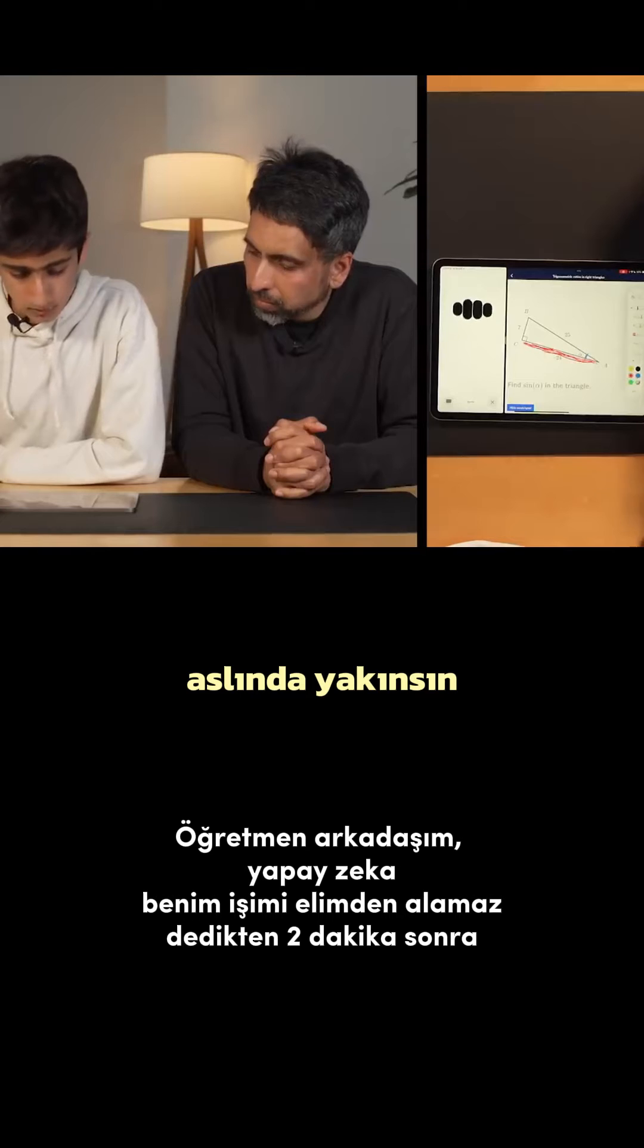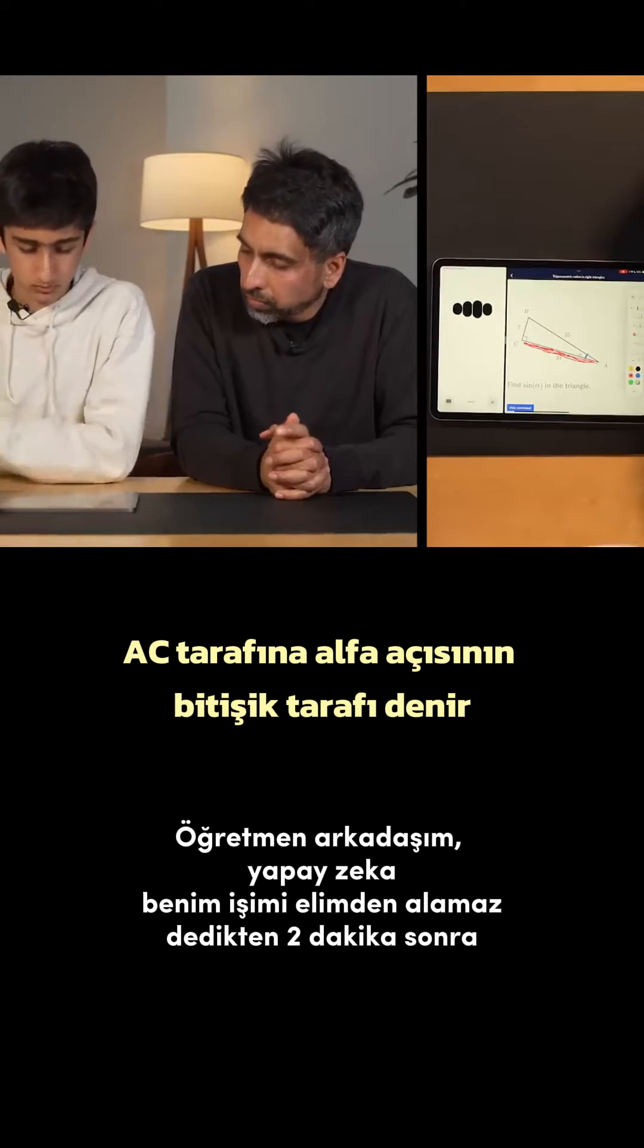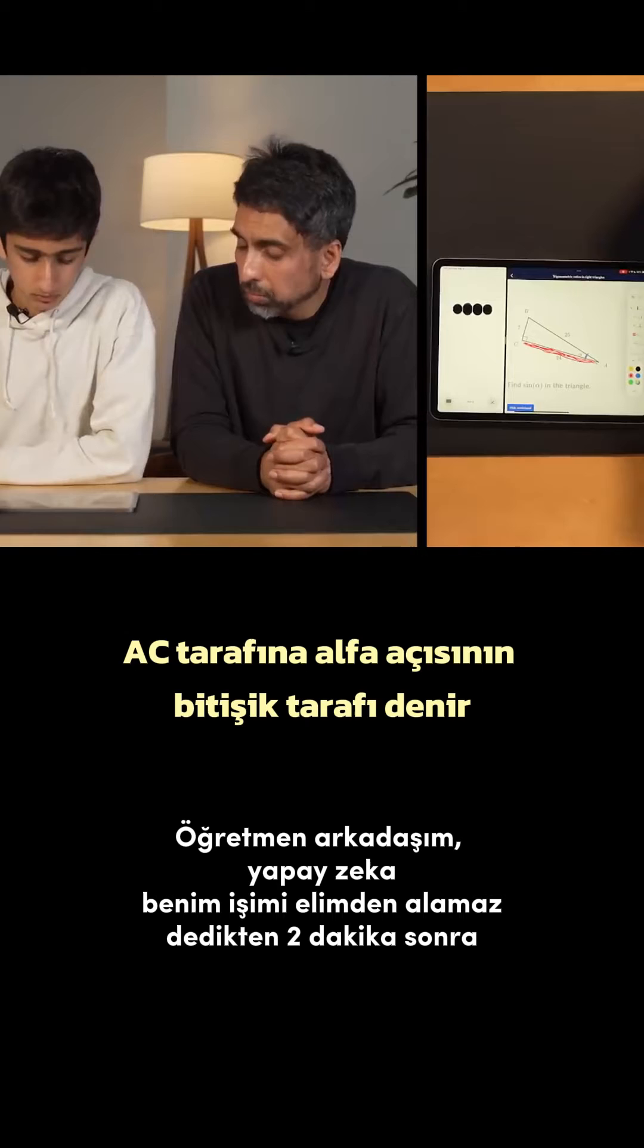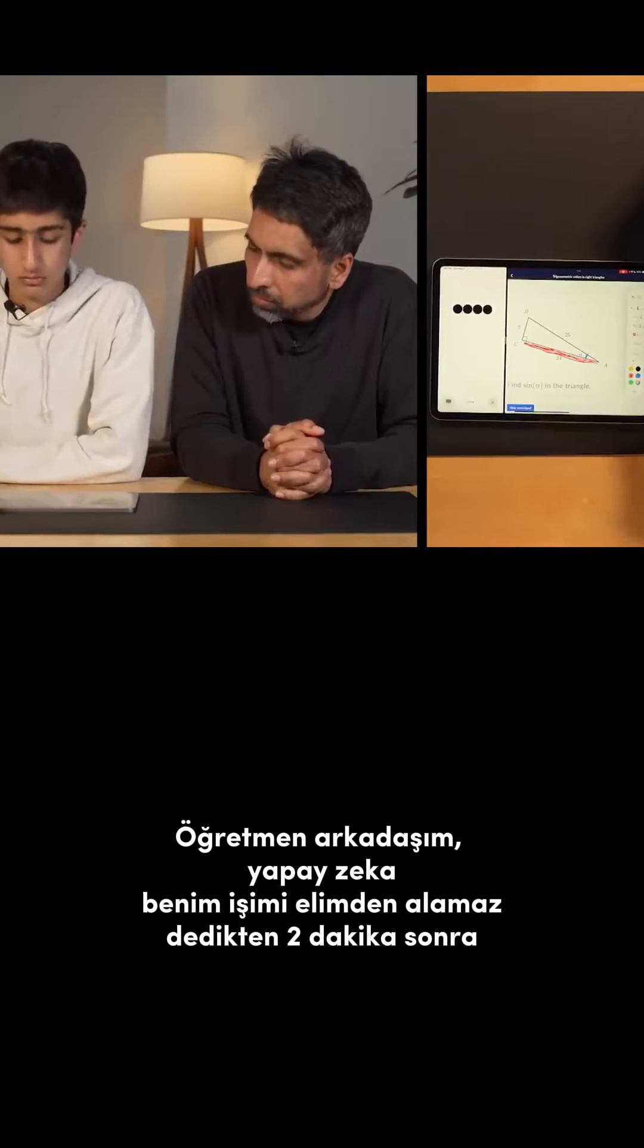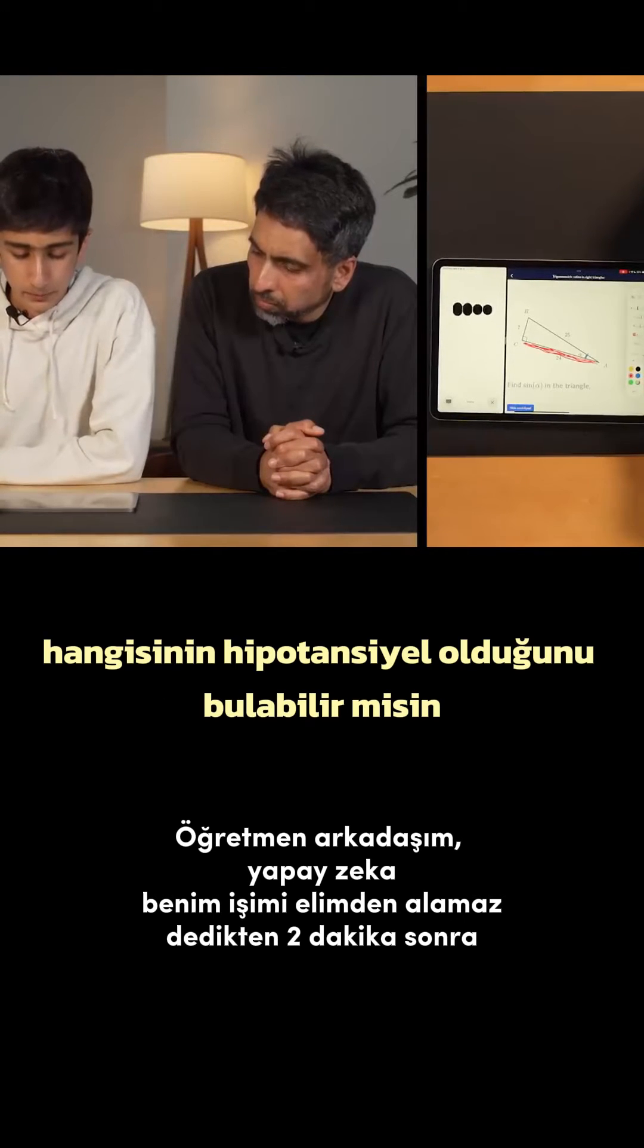You're close. Actually, side AC is called the adjacent side to the angle alpha. The hypotenuse is the longest side of a right triangle and is directly opposite the right angle. Can you find which one is the hypotenuse?